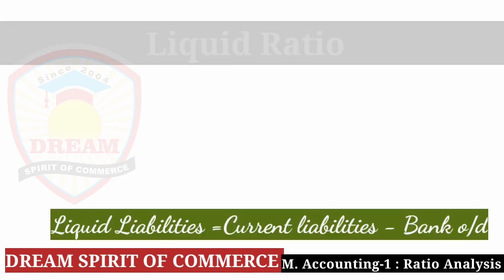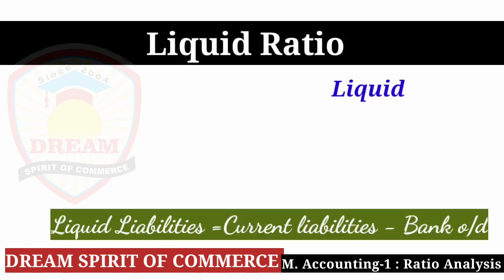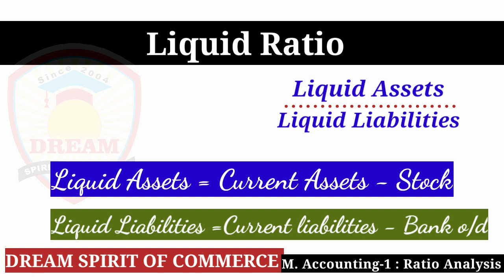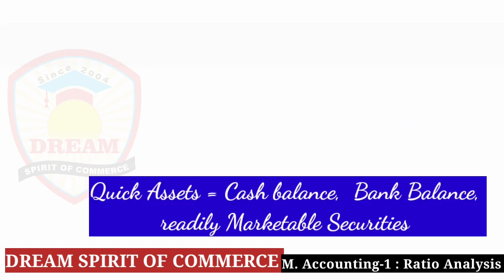Now Liquid Ratio: Liquid Ratio equals Liquid Assets divided by Liquid Liabilities. To find Liquid Assets, take the current assets we already found and minus Stock — so Liquid Assets equals Current Assets minus Stock. And Liquid Liabilities equals Current Liabilities minus Bank Overdraft.